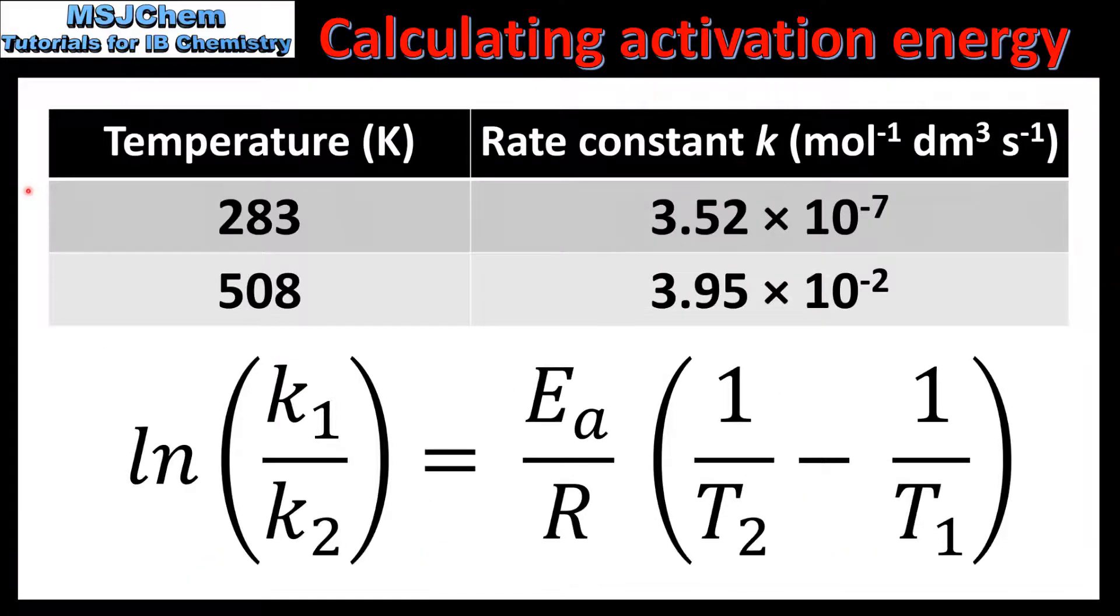In the next method of calculating activation energy we use the value of the rate constant at two different temperatures. In this table we have the value of the rate constant for a reaction at two different temperatures, which are 283 Kelvin and 508 Kelvin.